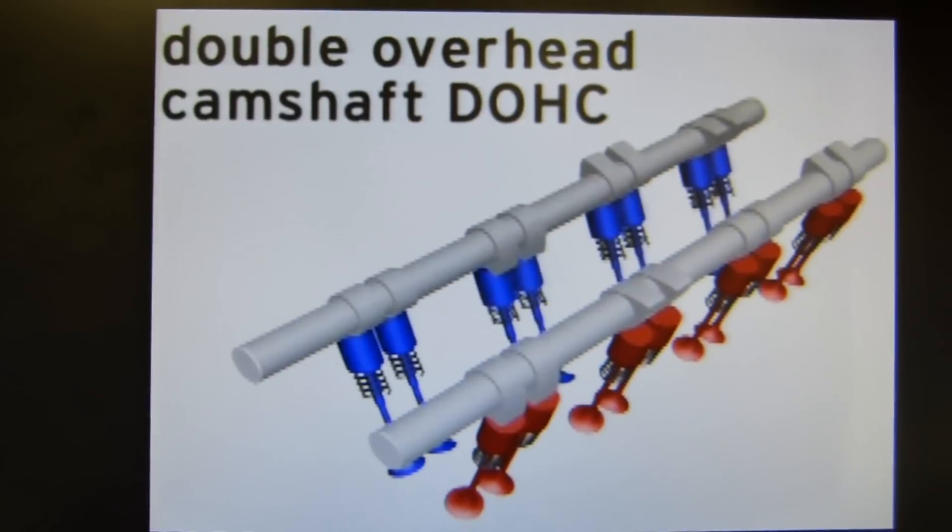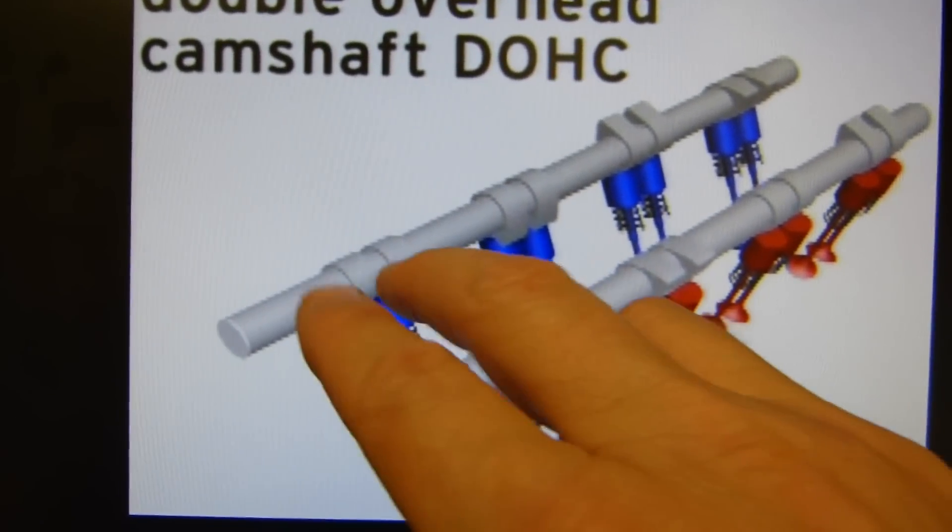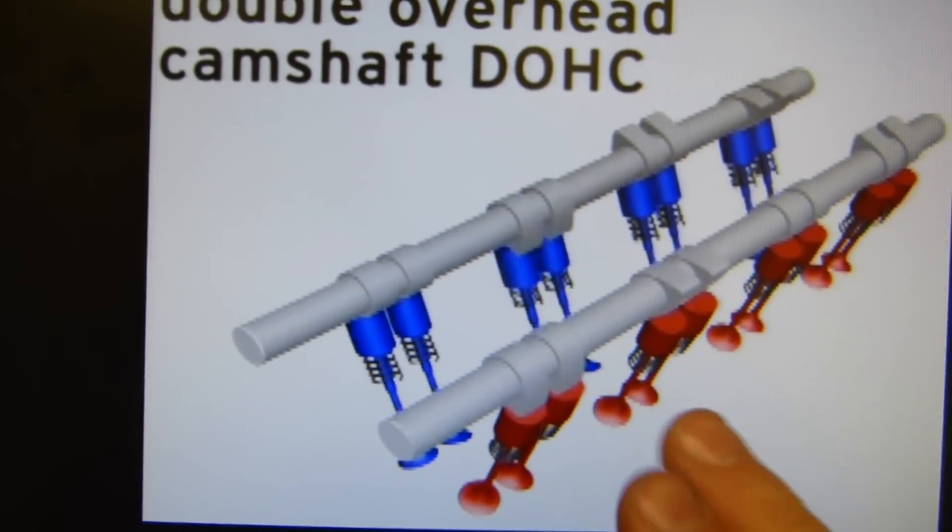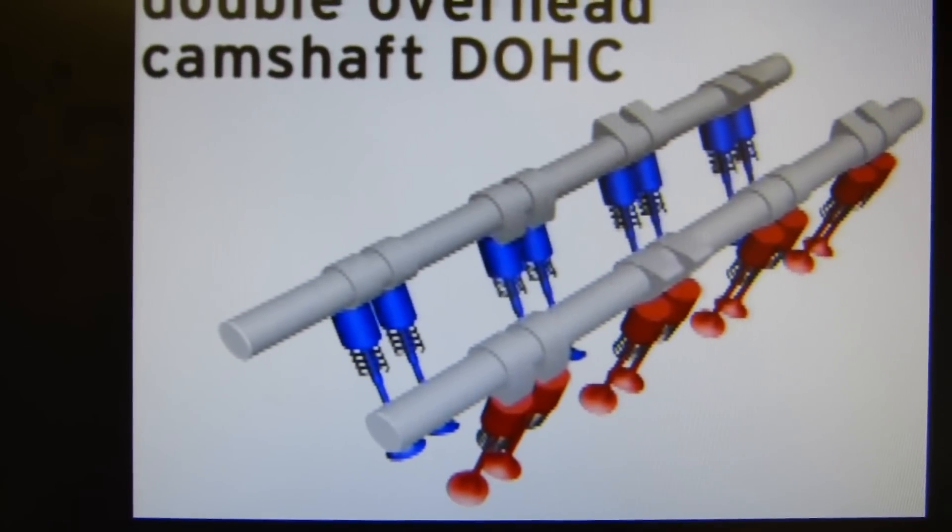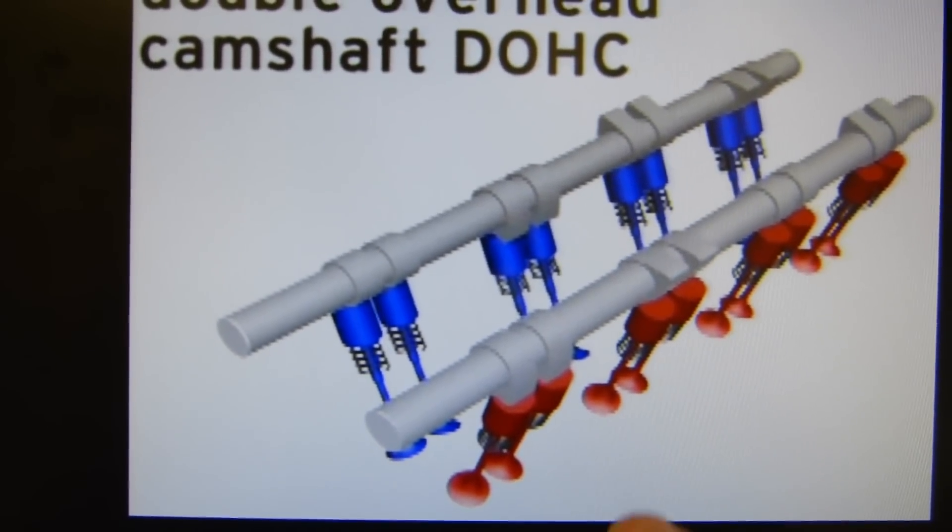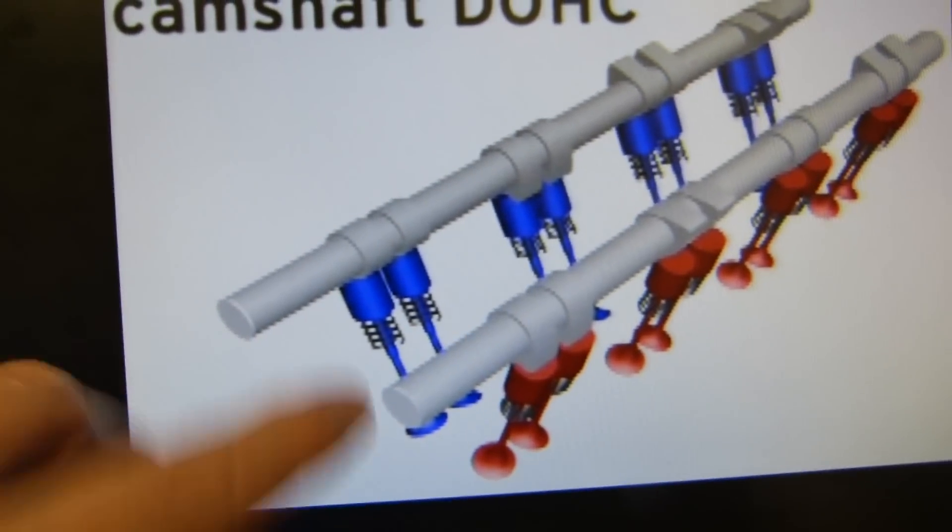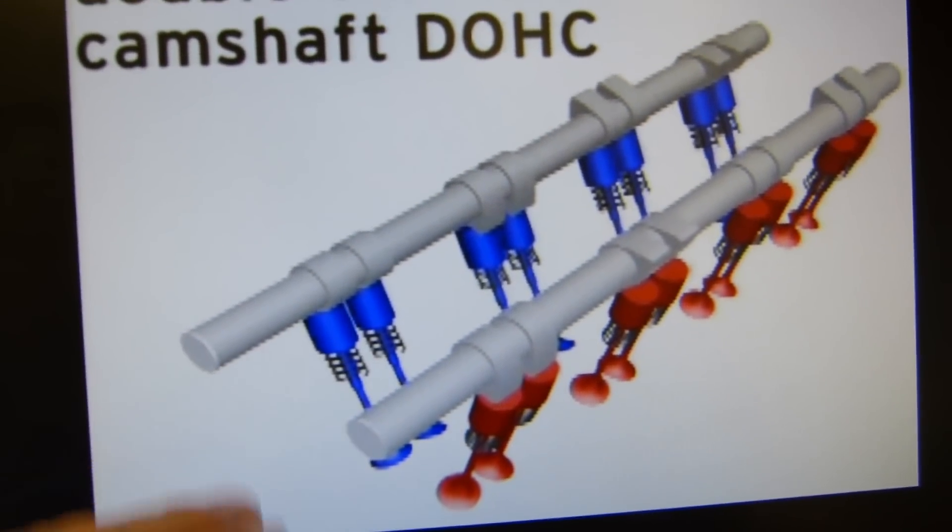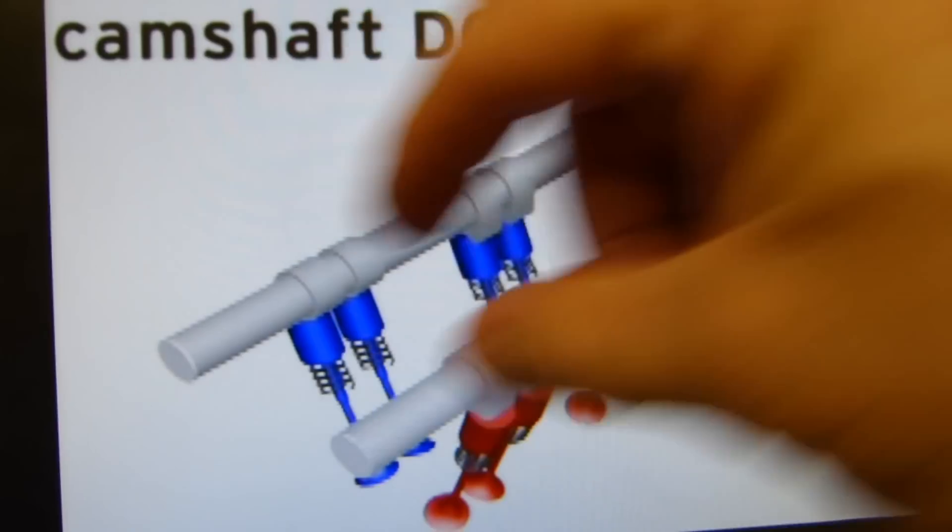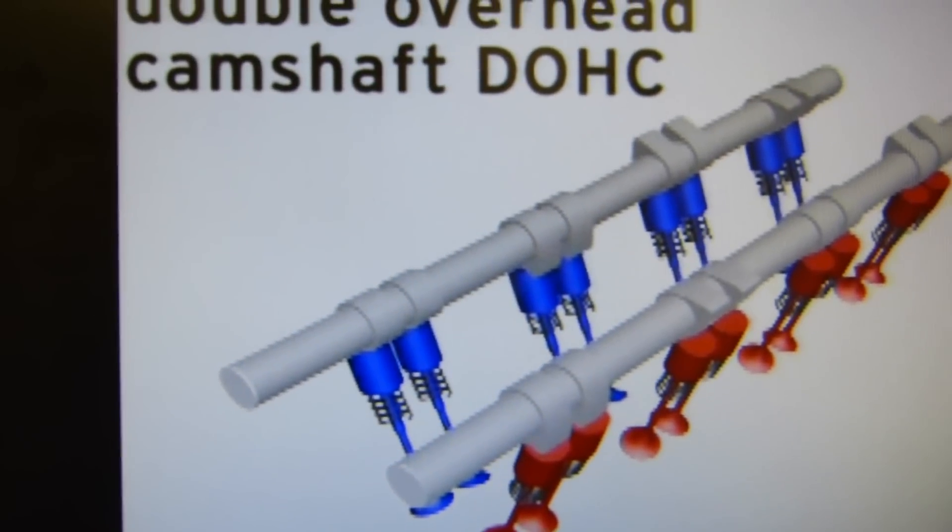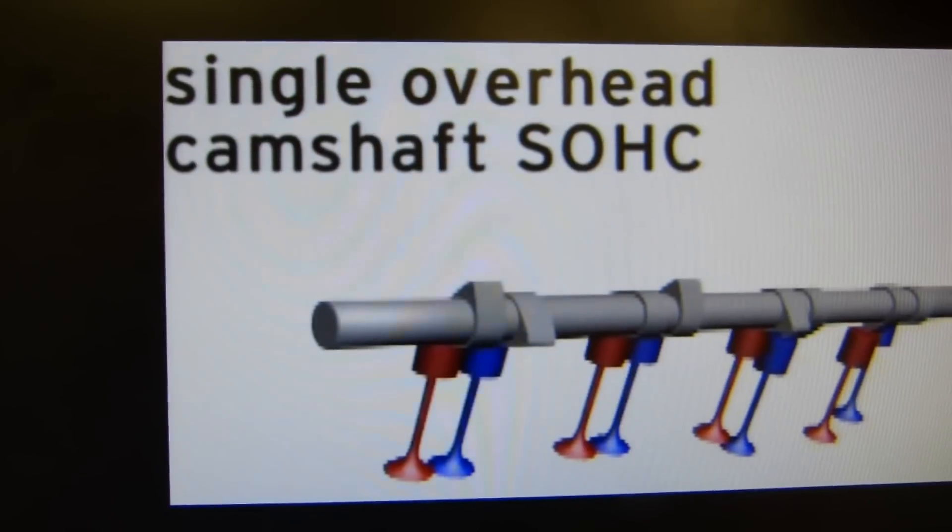Another design is the double overhead cam, when you have two of these camshafts. One is exclusively for the intake, the other one exclusively for the exhaust. These are timed differently. So it needs two of those sprockets and a longer chain. You have double the overhead rotating mass than in a single overhead design.